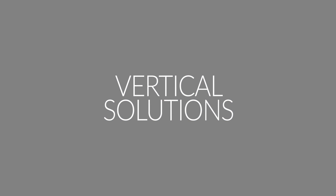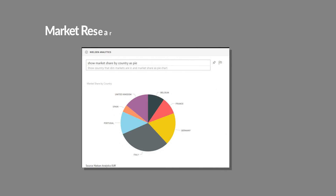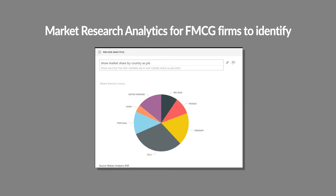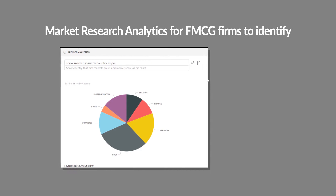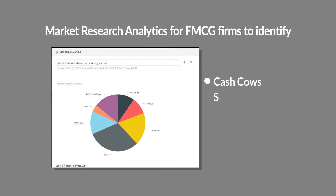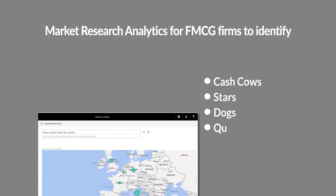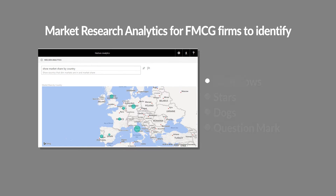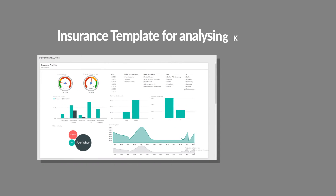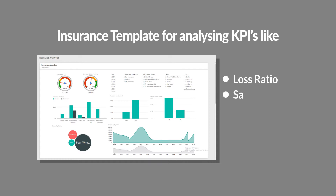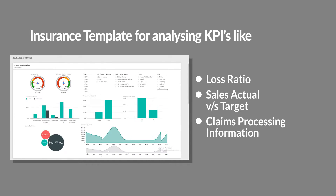Vertical solutions include market research analytics for FMCG firms to identify the cash cows, stars, dogs, and the question marks — top gaining and losing brands and markets. There is also an insurance template for analyzing KPIs like loss ratio, sales actual versus target, and claims processing information.